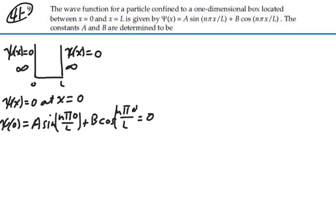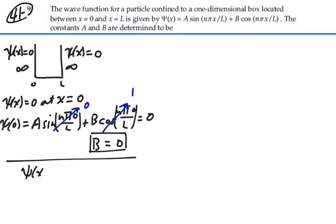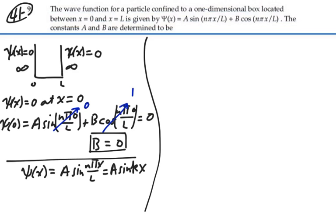Well, the sine of 0 is equal to 0, and the cosine of 0 is equal to 1. So what we're left with is B is equal to 0. So our B constant must be equal to 0, and in general, our wave function is going to be equal to A sin(nπx/L), or A sine(kx), where k is equal to nπ/L.